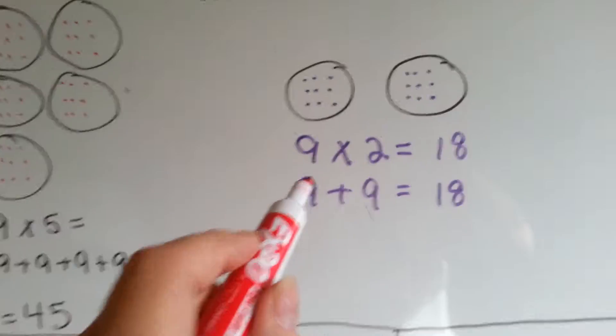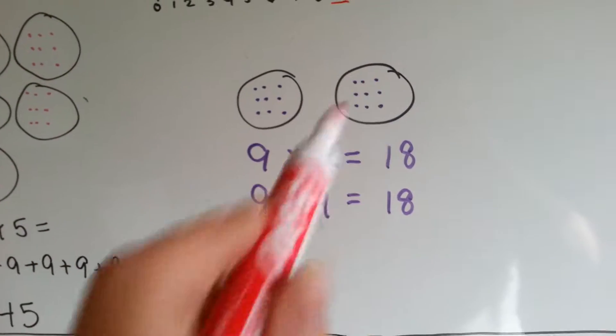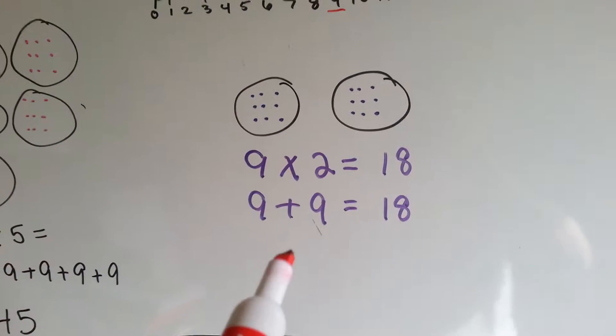Like 9 times 2, that means you have 2 nines. 1, 2. 9 times 2 is 18.